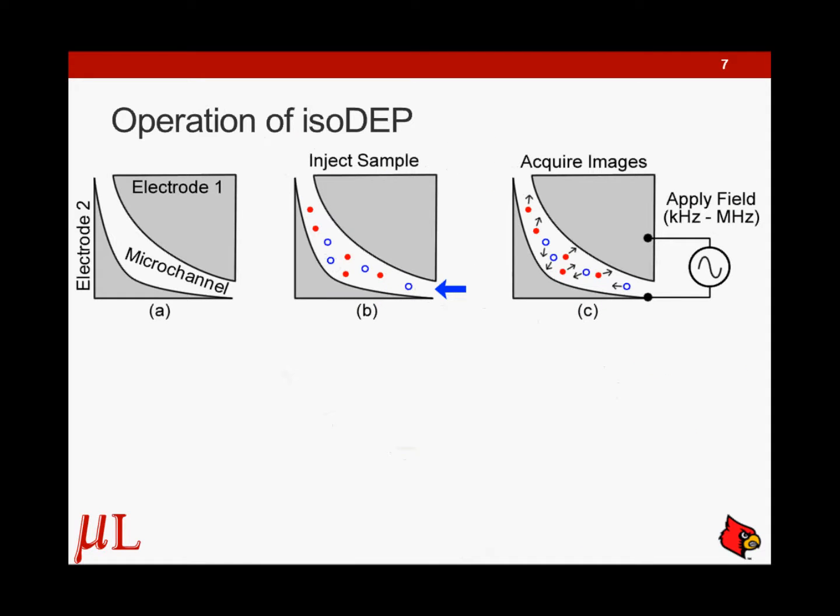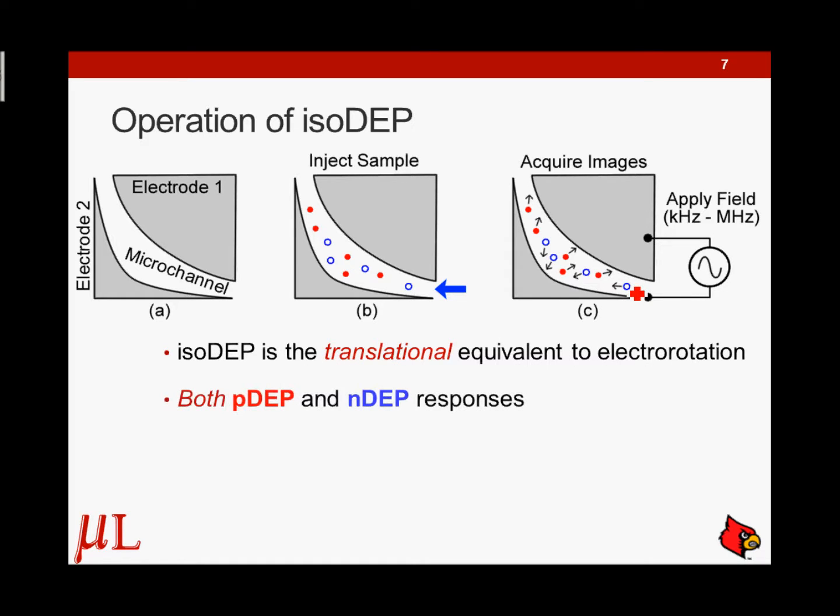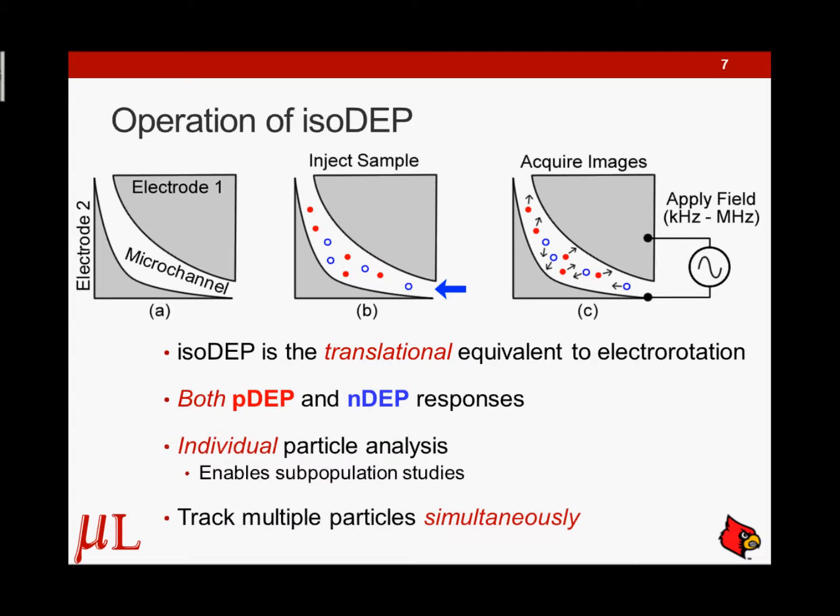So what's the premise? With respect to the operation of this device that we are working on, we inject our sample within the microchannel, we stop the movement of the fluid, we apply our field over a range of frequencies, we track individual particles, and effectively, the isomotive dielectrophoresis is the translational equivalent to electrorotation. Recall that dealt with rotation. Now we can do both positive and negative dielectrophoresis with the tracking. You can do individual particle analysis, and we can track multiple particles simultaneously. So we've thereby increased the throughput compared to electrorotation.